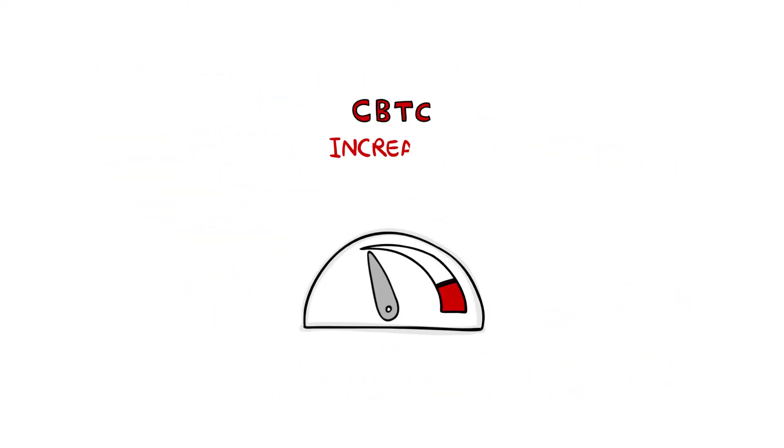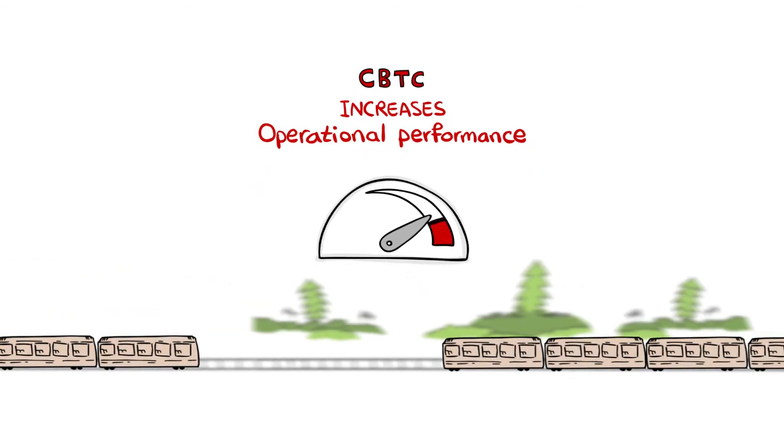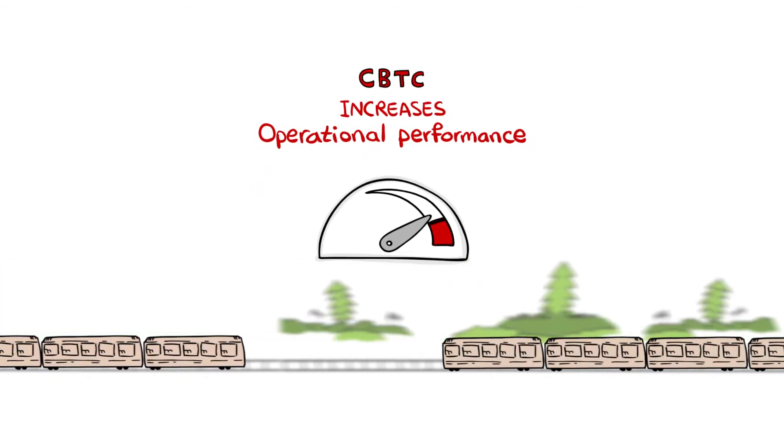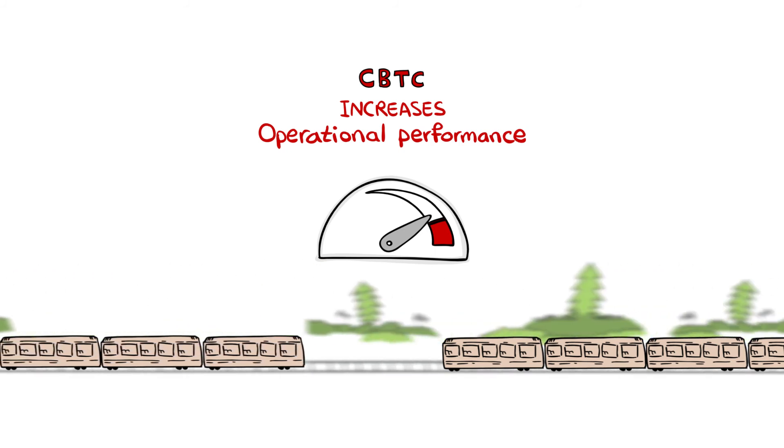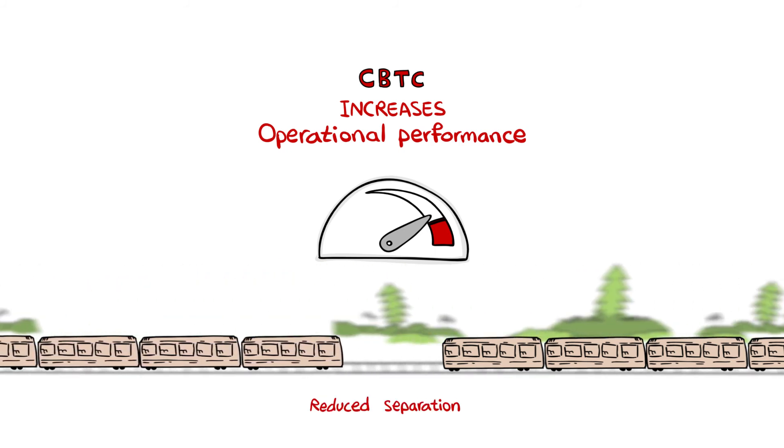Contrary to popular belief, operational performance is the primary reason. CBTC is attractive because of its ability to bring trains closer together which increases throughput than is possible in a conventionally signalled subway.